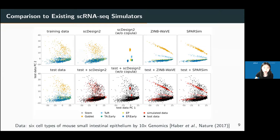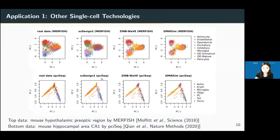Beyond single-cell RNA-seq, SC Design 2 can also generate synthetic data for other single-cell count-based technologies, including MERFISH and PCI-seq, which are spatial transcriptomics technologies. In PCA visualization comparing real data, SC Design 2, ZINB-wave, and sparsene, by looking at the colors — for example, the pink cells — SC Design 2 looks most like the real data, while other simulators divide the pink cells into incorrect positions. For PCI-seq, similarly, our method correctly places the purple cells, while other simulators do not.